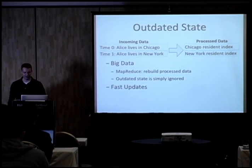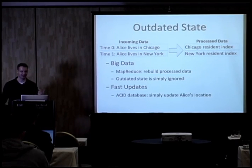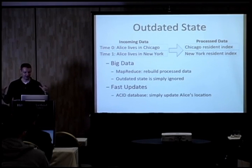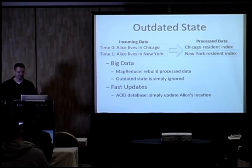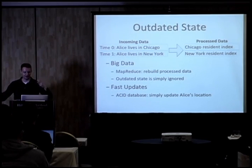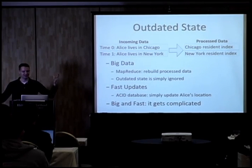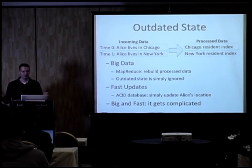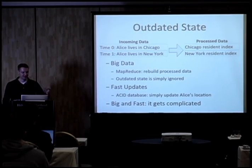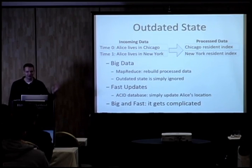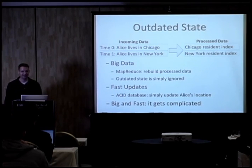That works for big data. If we're dealing with fast updates that can fit in an ACID database — fit everything into relational, completely normalized data — that's simple too: just update Alice's location from one spot to another. But where we run into trouble is if we have data that is very large and can't fit into a single coordinated database, but is coming in too fast to apply MapReduce-style reprocess-the-world events. Neither of these simple and easy-to-understand processing metaphors can be applied in this context. This gets really hard.